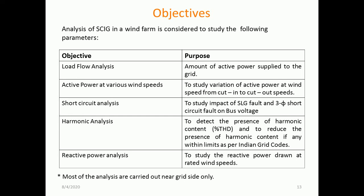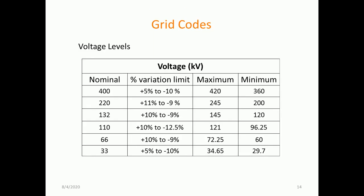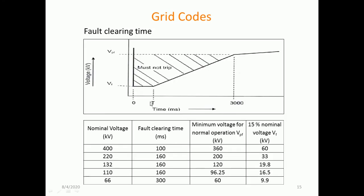You can observe the grid codes for voltage. For a 130 kV system, the percentage voltage variation is in the range of plus 10% and minus 9%, which is a maximum of 145 kV and a minimum of 120 kV. The fault clearing time can also be termed as the LVRT characteristics — when a particular fault occurs on the system, specifying for how long and at what particular voltage the wind turbine should remain connected to the grid without disconnection. This is the LVRT characteristic which has to be maintained.